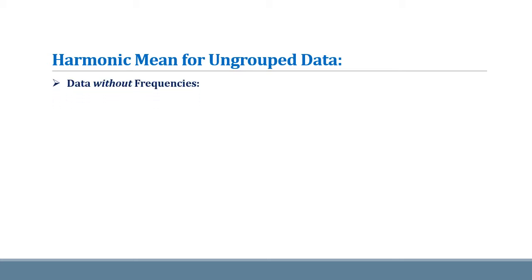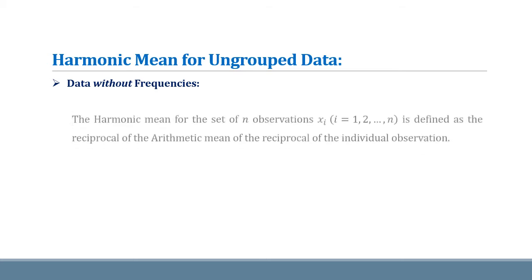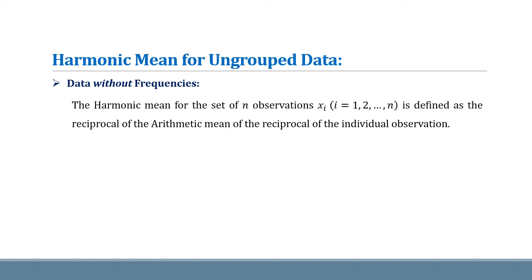First we see the harmonic mean for ungrouped data. When ungrouped data is given without frequencies, the harmonic mean can be calculated as follows. The harmonic mean for a set of N observations Xi is defined as the reciprocal of the arithmetic mean of reciprocal of individual observations.